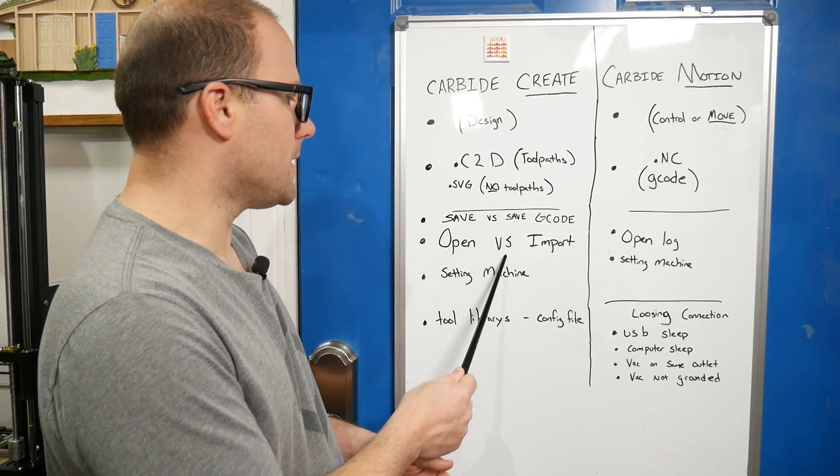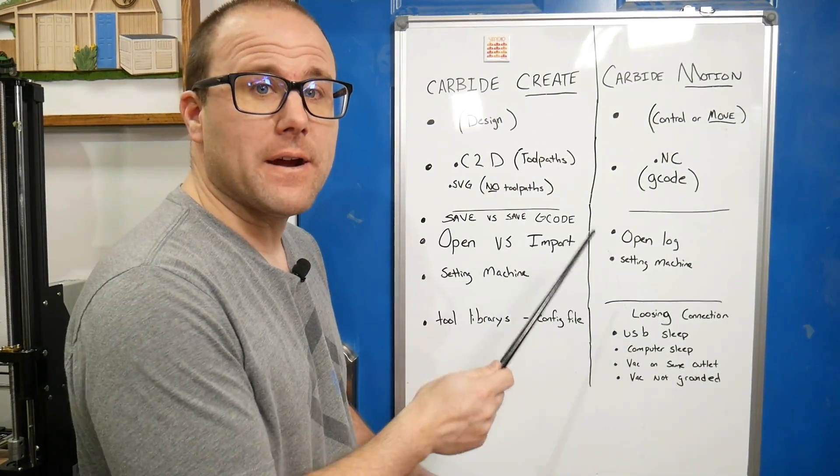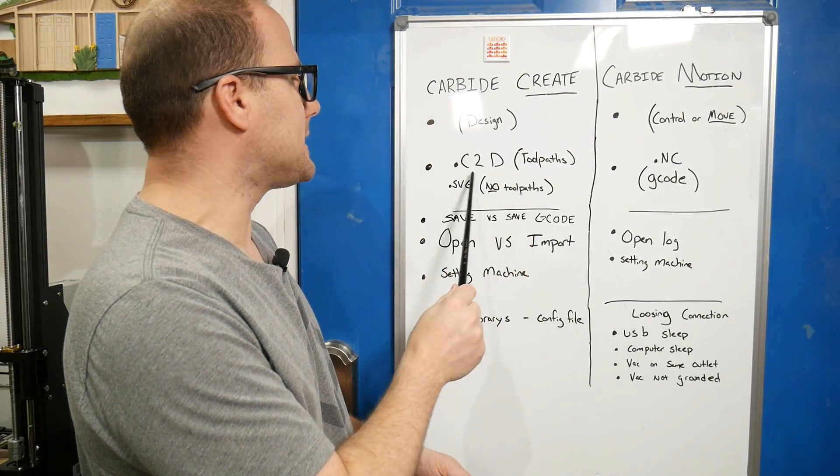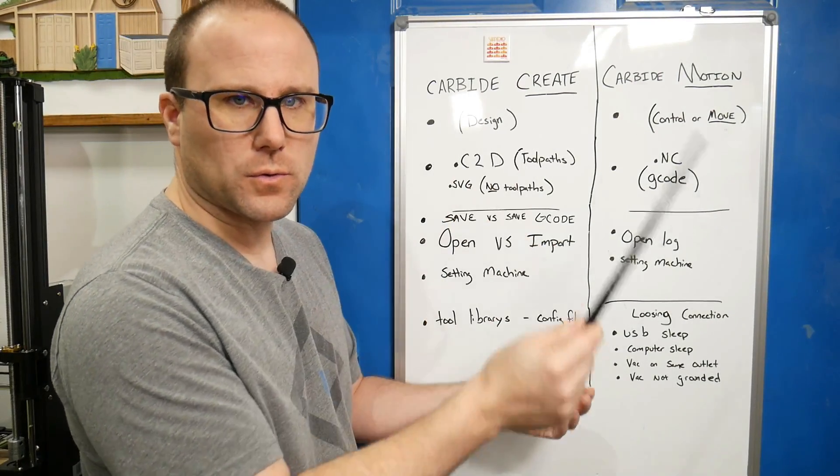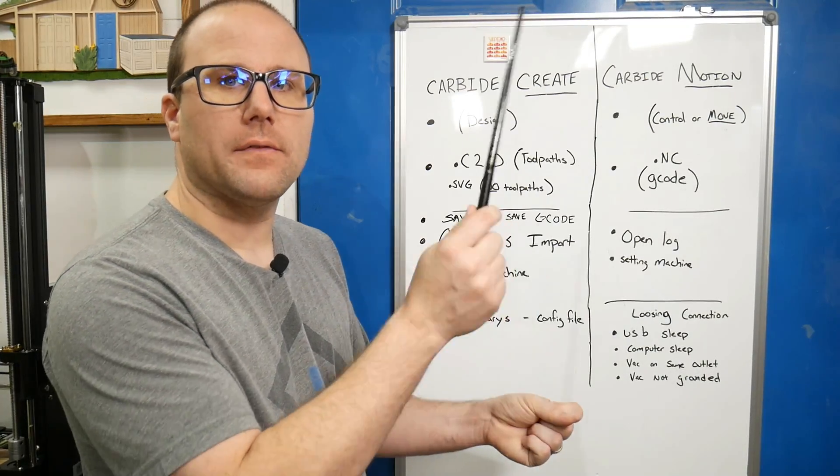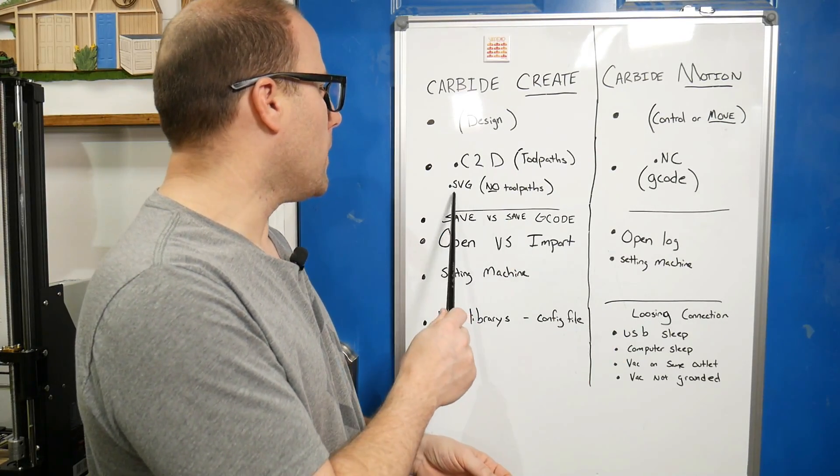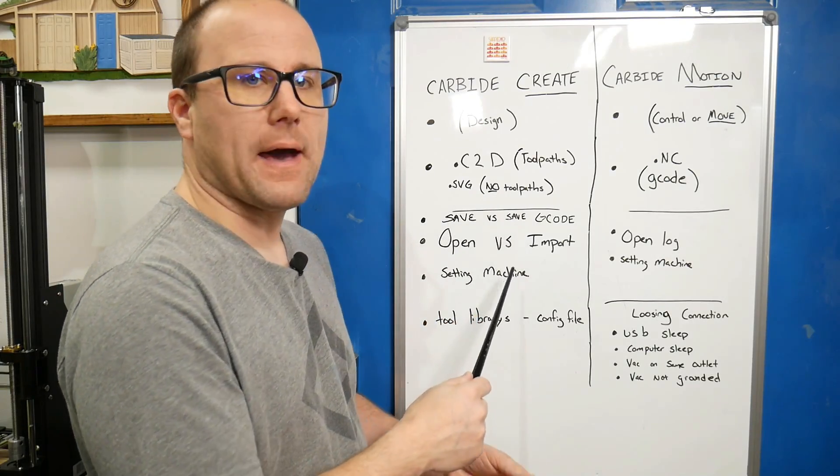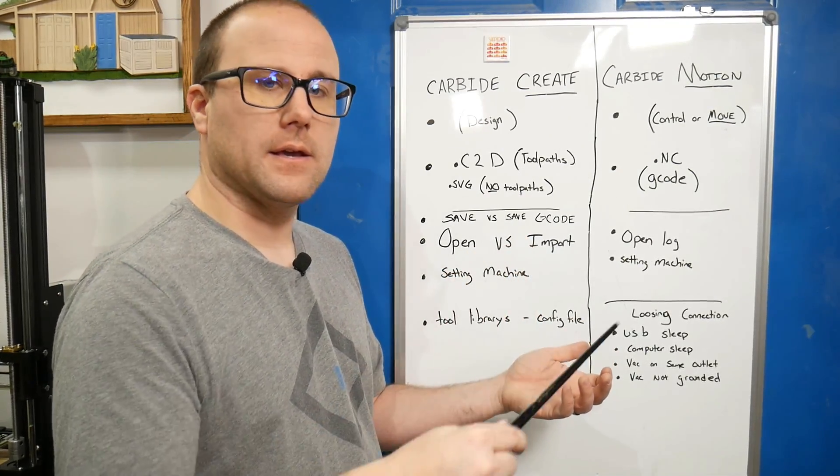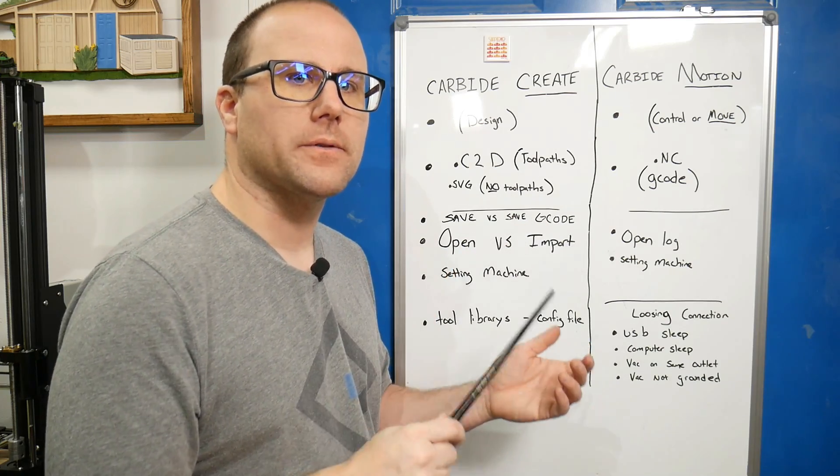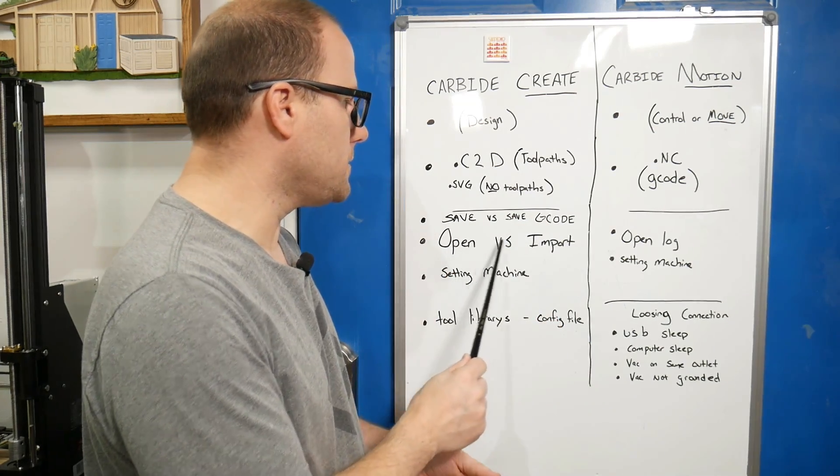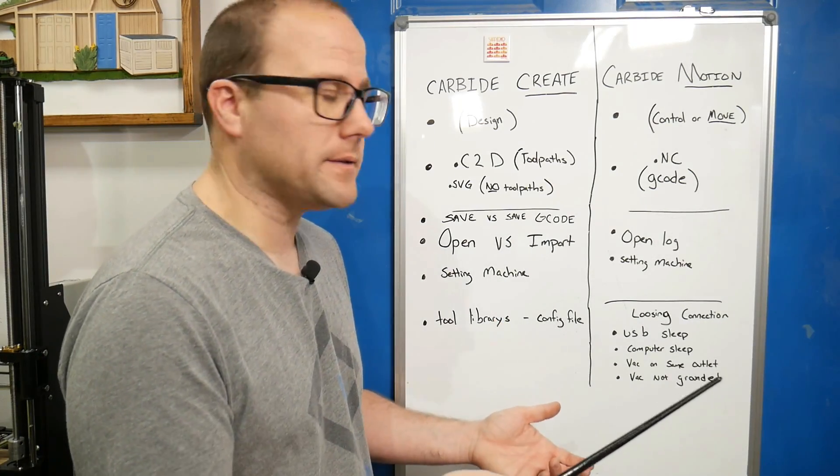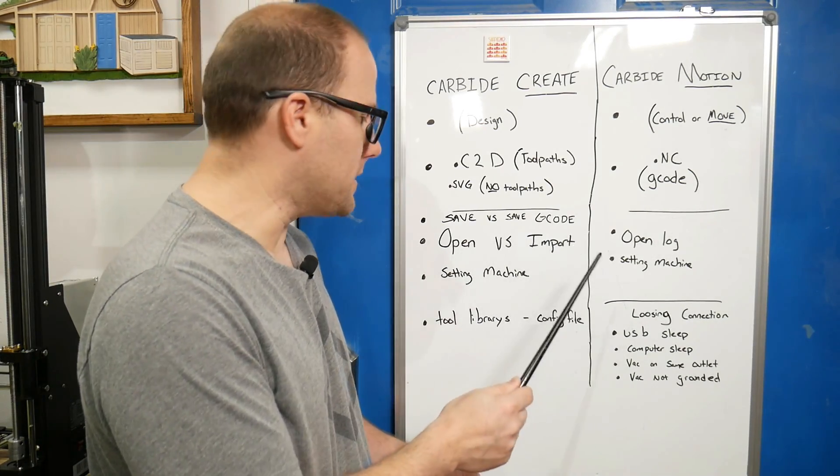Now we have open versus import - very important. Open will be opening the Carbide Create .c2d with all the toolpaths. If we click import, we will open maybe a picture file or an SVG and that will open with the design but not show the toolpaths. A lot of people mistake the import for an open button. It is not the same.